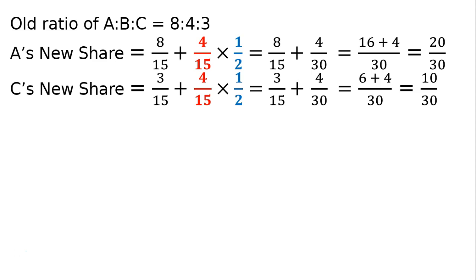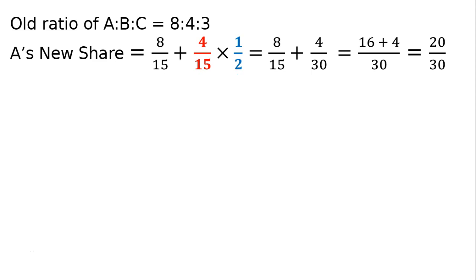Let's solve this. A's new share = 8/15 + 4/30. LCM is 30. 30 divided by 15 gives 2, times 8 gives 16. So 16 + 4 = 20/30.